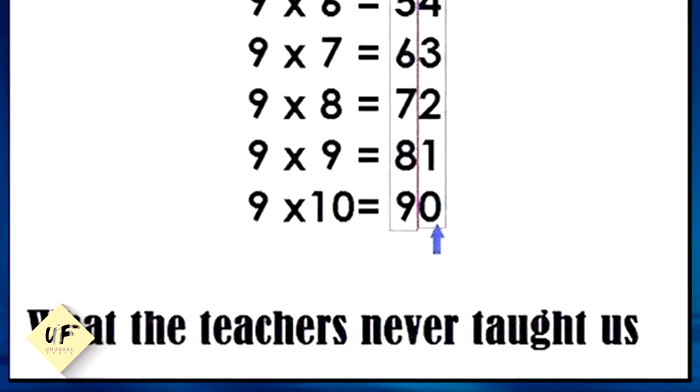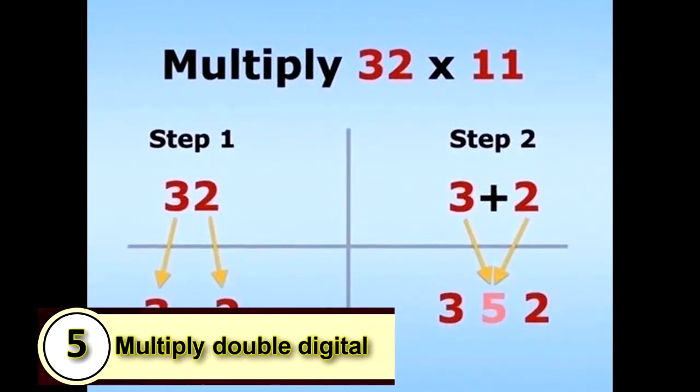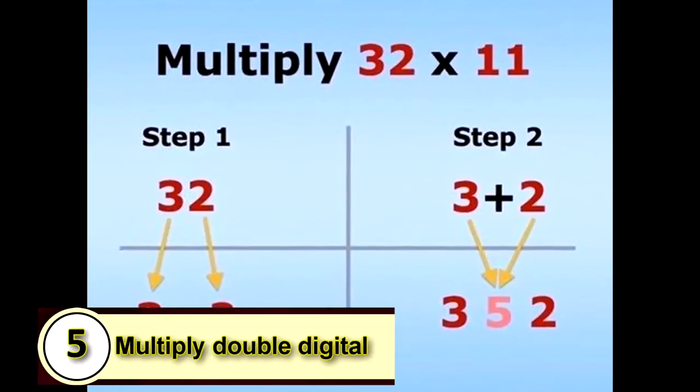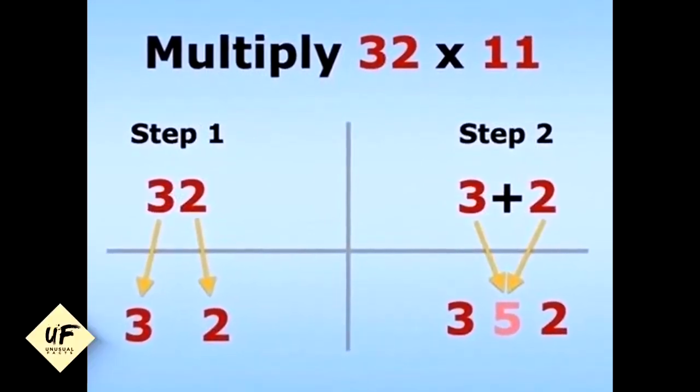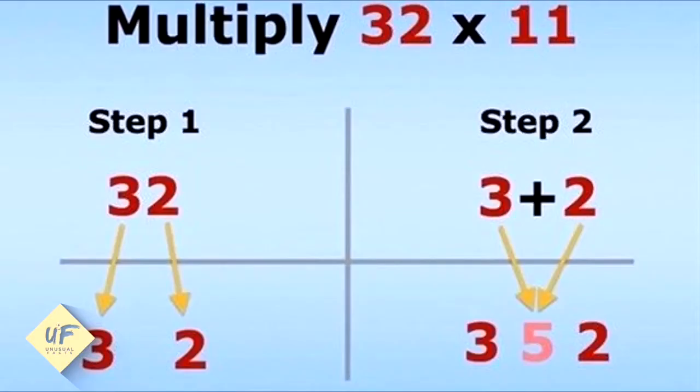Number five: here's how you can multiply double-digit numbers by 11. Let's multiply 32 times 11. Step one: the 32 now becomes a three and a two. Step two: the three is added to two, which equals five. That's 352.